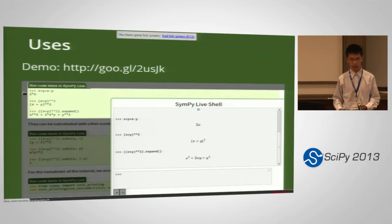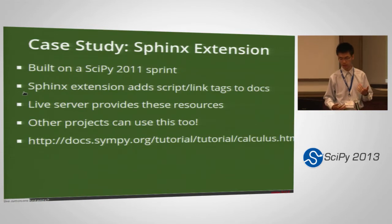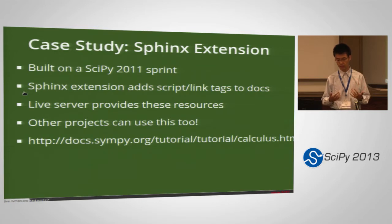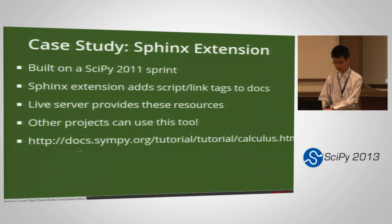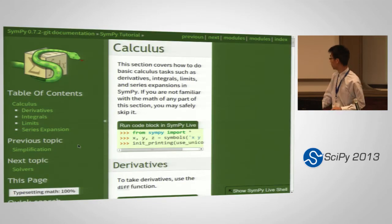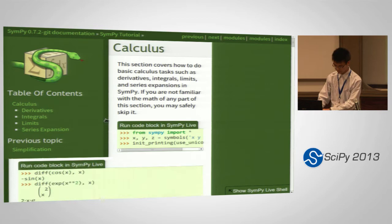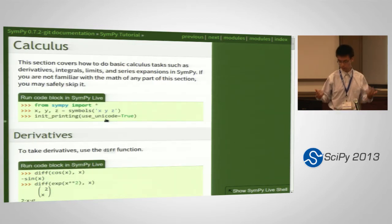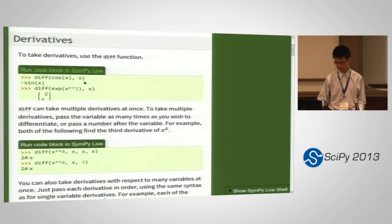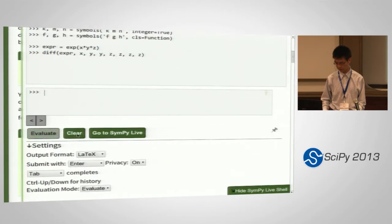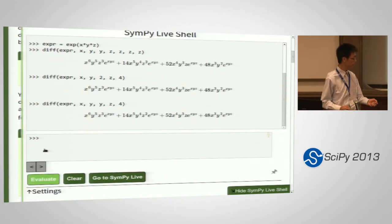The biggest use for this is actually in our documentation. We created a Sphinx extension that integrates with Sphinx and allows users to automatically evaluate code blocks in the Sphinx documentation using this shell. This is the tutorial from a few days earlier, and as you can see, there are buttons attached to every code block. If you just click on one of them, it will automatically pop up and evaluate the expression for you.